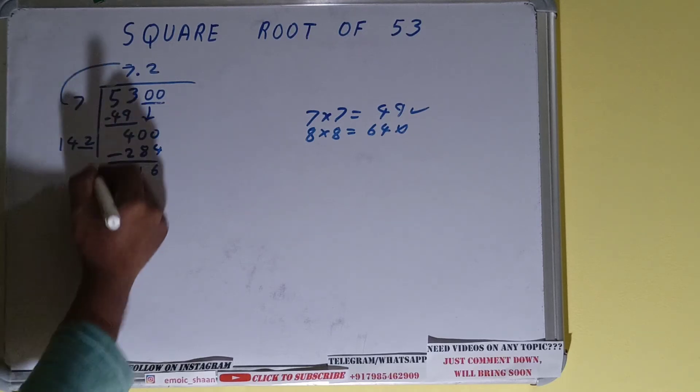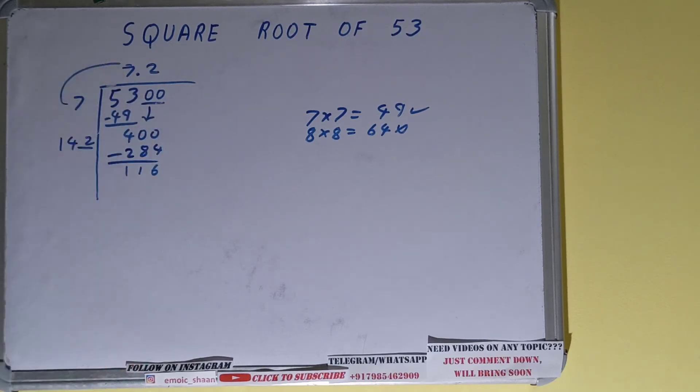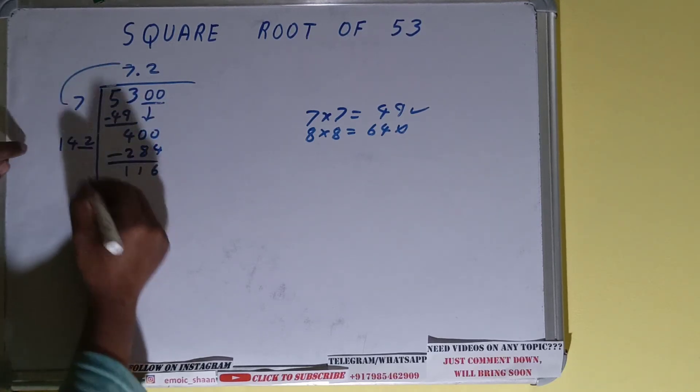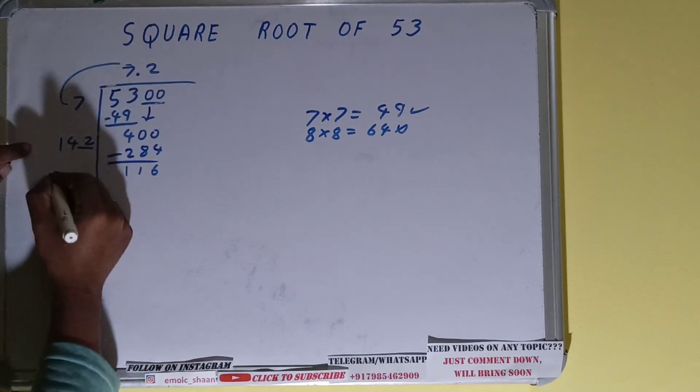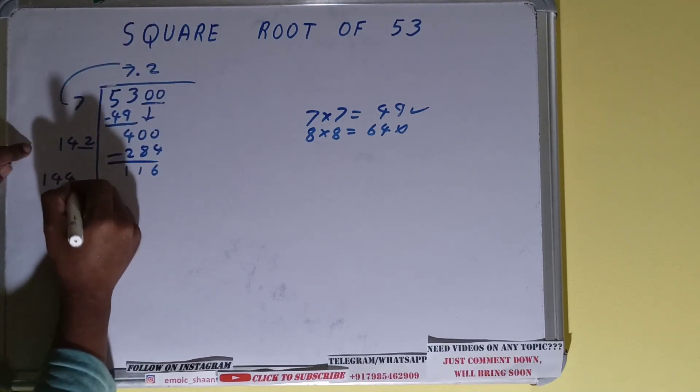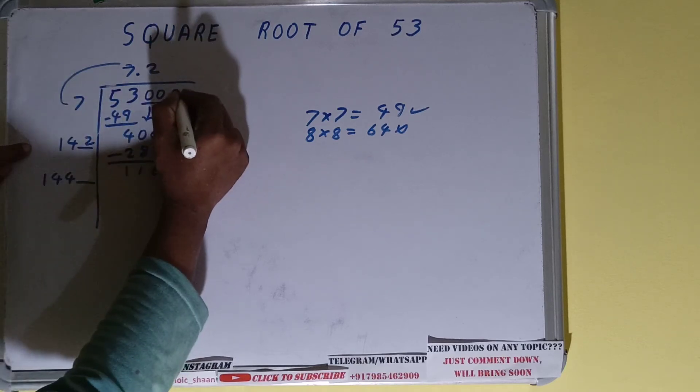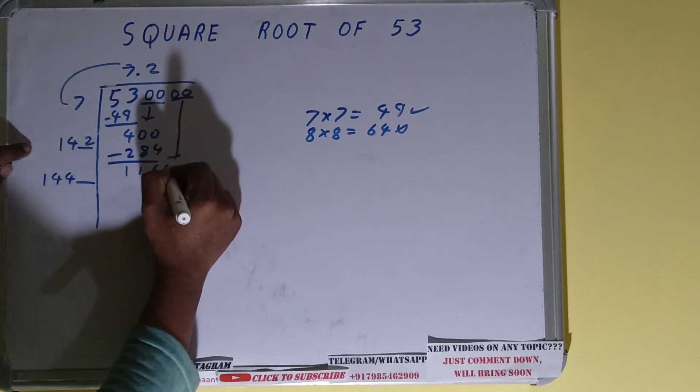All right, now again for this 142, you multiply it with 2, so add both. So it will become as 144, and keep one digit extra for this. Take one more pair of zeros down. It will become as 11,600.